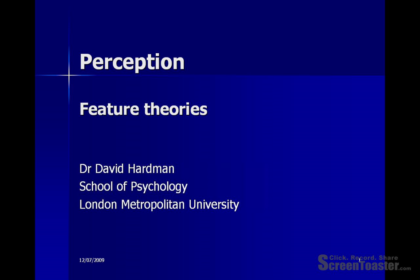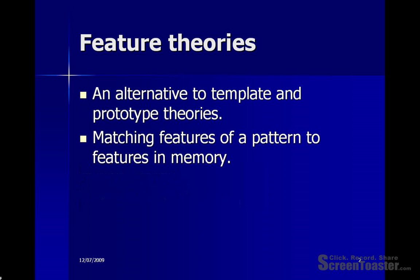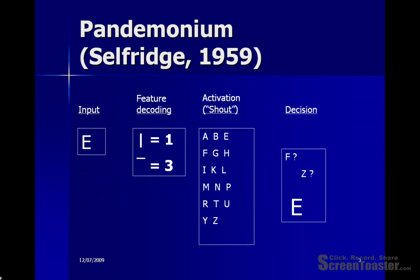Hello, this is David Hardman and in this presentation I'm going to be talking about feature theories of perception. Feature theories have been proposed as an alternative to template and prototype theories. These are theories which suggest that the way we recognise things is by comparing visual inputs to either templates or prototypes that are stored in memory. However, feature theories suggest that when we receive visual input it's decomposed into component features and these features are then compared to critical features that are stored in memory.